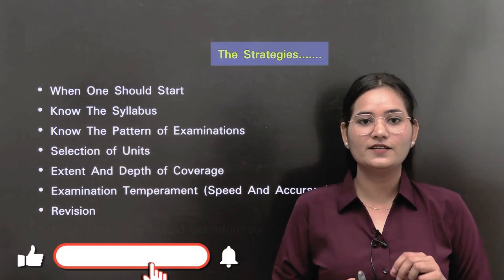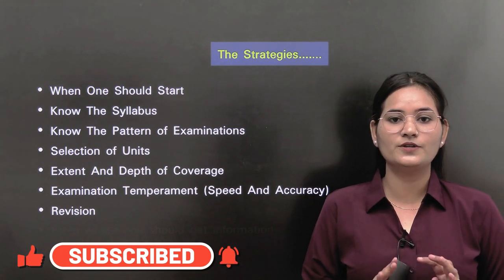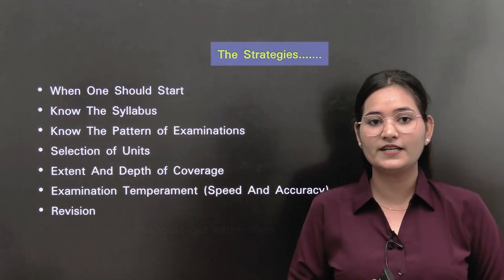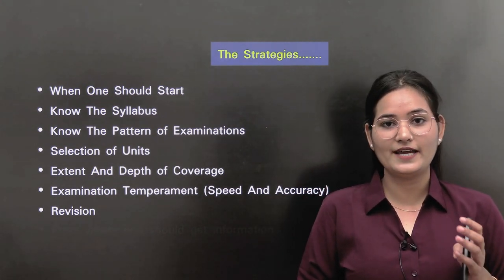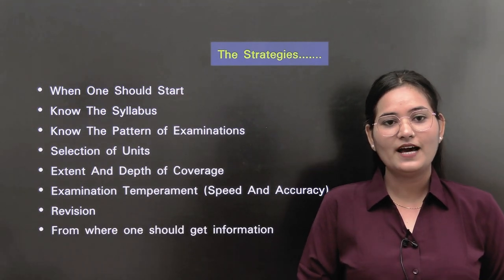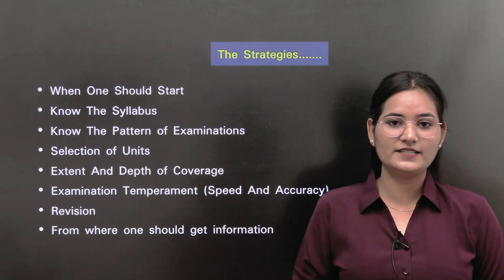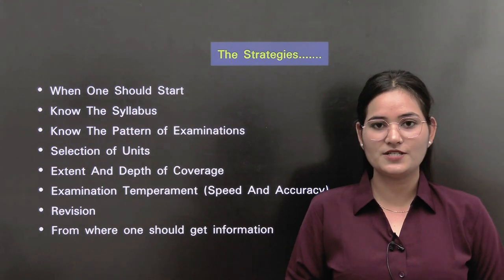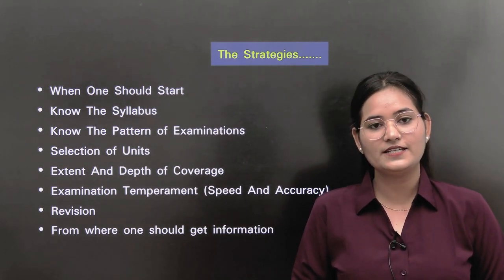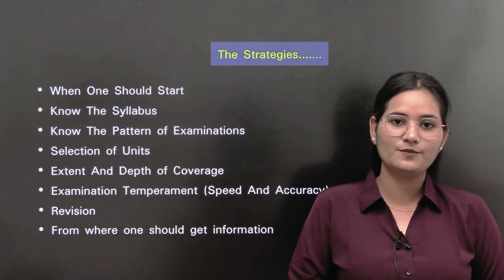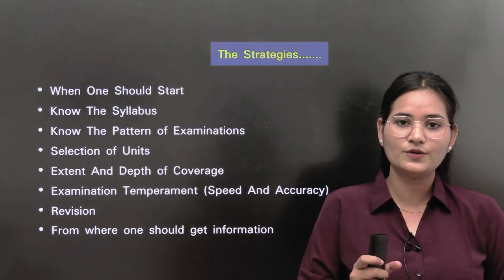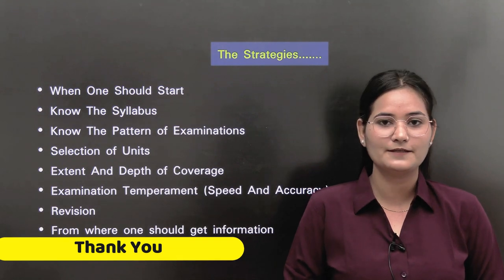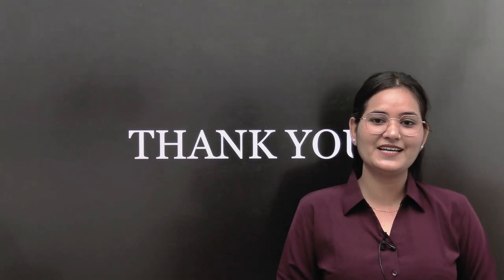Regarding revision: since the CSIR syllabus contains 13 units and you need to prepare at least 9 to 10 of them, you must do time-to-time revision. Finally, get information from standard books and specific journals only, because CSIR requires accurate information available through standard books and reputed journals. Wishing you all the very best for your upcoming examination. Thank you.